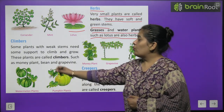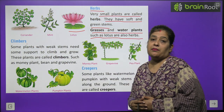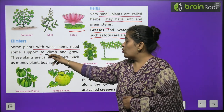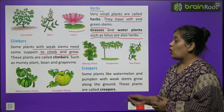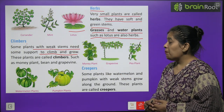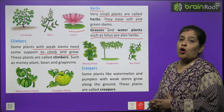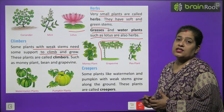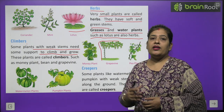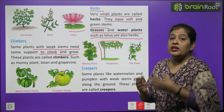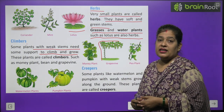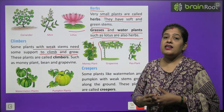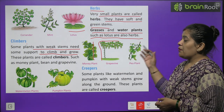Now we will learn about climbers. Some plants with weak stems need some support to climb and grow — these plants are called climbers, such as money plant, bean and grapevine. Some plants are weak and need the support of a stick or another plant to grow. Such plants are called climbers, like grapevine and money plant.